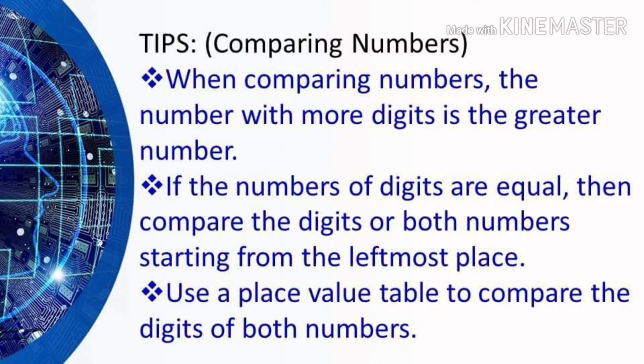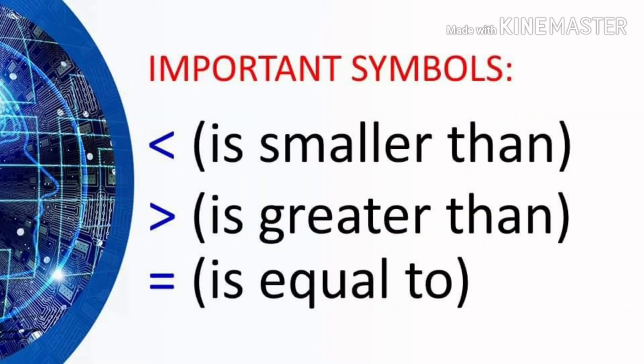Here are some tips when comparing numbers. When comparing numbers, the number with more digits is the greater number. If the numbers of digits are equal, then compare the digits of both numbers starting from the leftmost place. Use a place value table to compare the digits of both numbers. Always remember these important symbols: a smaller than symbol, a greater than symbol, and an is equal to symbol.